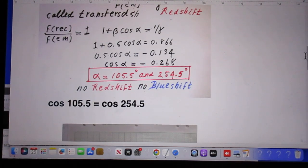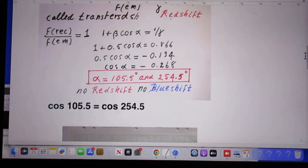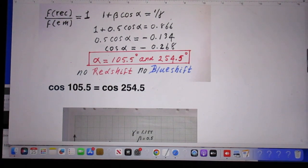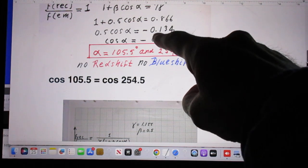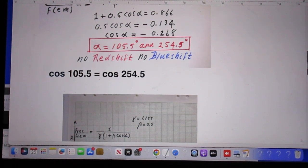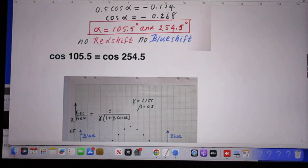What we want is that the frequency received is the same as the frequency emitted. Therefore, there is no blueshift and there is no redshift. So that can only happen if 1 plus beta cosine alpha is 1 over gamma. That's a trivial equation, high school equation, and you find immediately that the cosine of alpha is then minus 0.268. And you find two angles: alpha is 105.5 degrees and 254.4 degrees. So with these angles, there is no redshift and there is no blueshift.